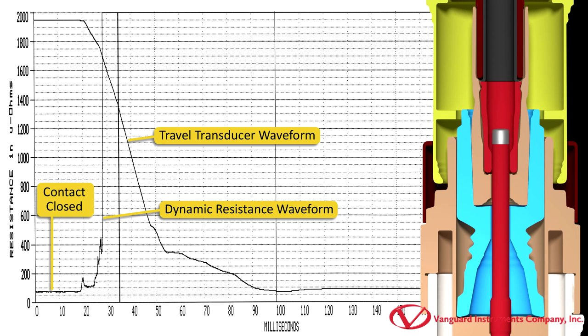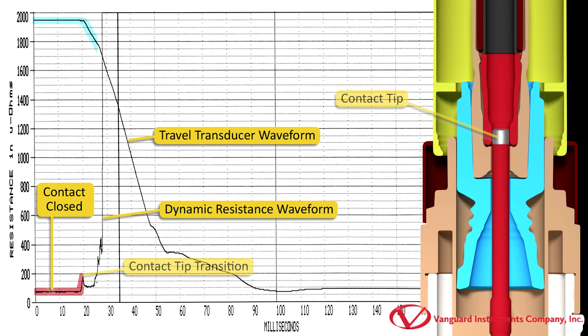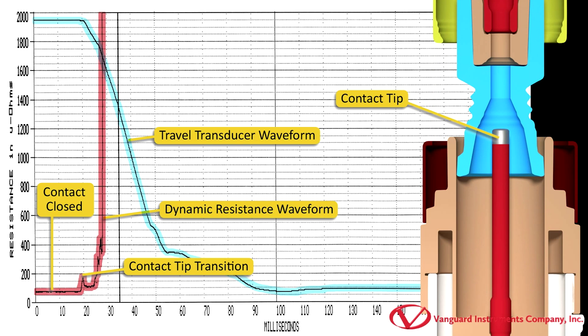From this graph of an open breaker operation, we can see that as the breaker opens and we reach the contact tip, the resistance spikes since the contact tip is made of a higher resistance material. Then, we can see the resistance going to infinity as the breaker continues to open completely.